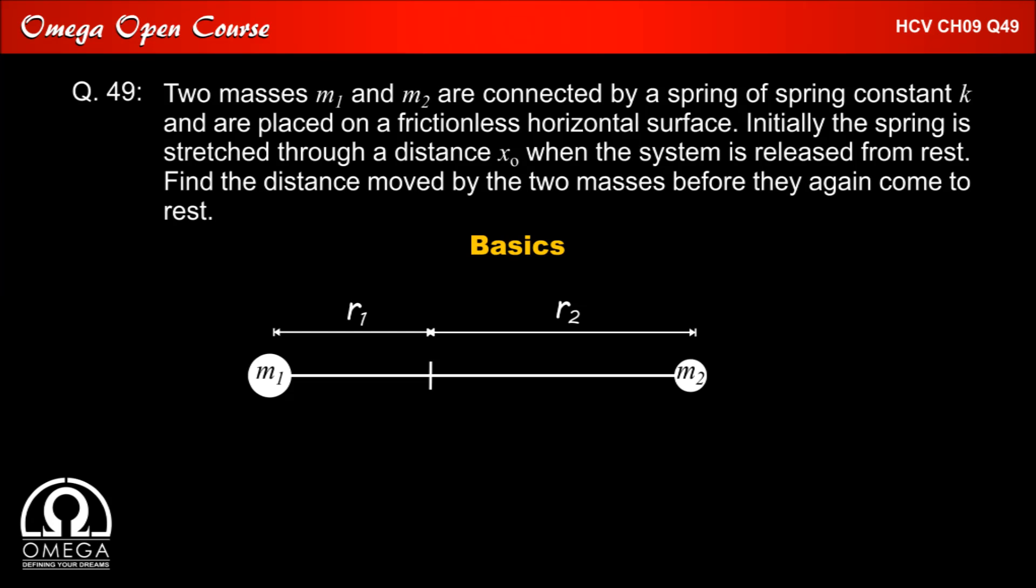In order to understand the solution of this question, we must first understand some basics of center of mass. Suppose there are two point masses of mass M1 and M2 respectively, and their distances from center of mass are R1 and R2 respectively.